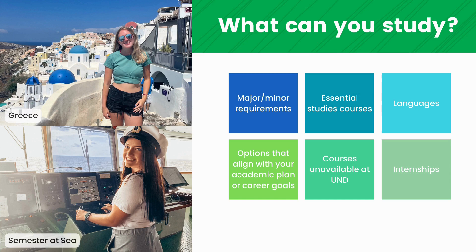What can you study? Students have options when it comes to course selection during their study abroad experience — from fulfilling major and minor requirements and essential study courses to diving into language studies and exploring electives that align with your academic plans or career goals. The possibilities are endless. Additionally, students can take advantage of internship opportunities abroad, enhancing academic and professional development. To ensure a seamless transition and staying on track for graduation, it is highly recommended to discuss studying abroad with your academic advisor. They can assist you in identifying courses to look for and help you navigate your academic requirements, creating a plan that aligns with your goals.